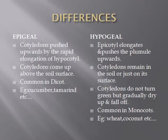Epigeal germination is very common in dicots — examples include cucumber and tamarind. In hypogeal germination, the epicotyl, which is above the cotyledons, elongates and pushes the plumule upwards. As you can see in the diagram, the epicotyl is below the plumule, so when the epicotyl elongates it pushes the plumule upwards. In this case the cotyledons remain in the soil and after some time dry off and fall off — the cotyledons are not green. This is very common in monocots, for example wheat and coconut.